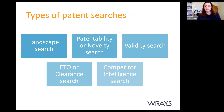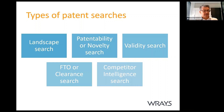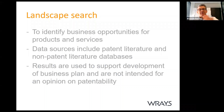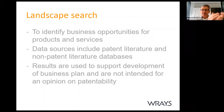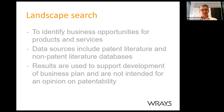There are different types of searches done at different times requiring different strategies. The first is a landscape search — an overview of what's going on in a certain field of endeavor. It's a mapping exercise to understand which areas of technology are highly patented and where there may be gaps in the market — where you might direct some of your research. You'd include non-patent databases as well where applicable.